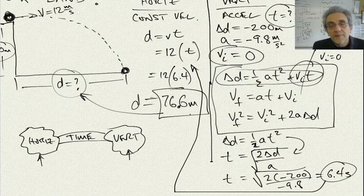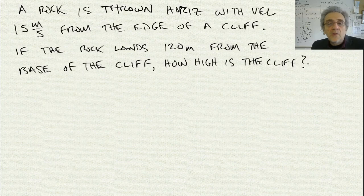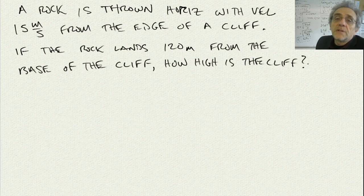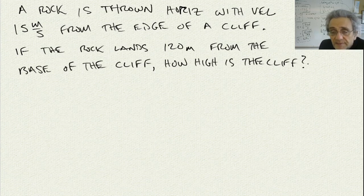Let's try another problem, and soon you'll see that these are all very similar and pretty easy. Here's our next question: a rock is thrown horizontally with a velocity of 15 meters per second from the edge of a cliff. If the rock lands 120 meters from the base of the cliff, how high is the cliff?